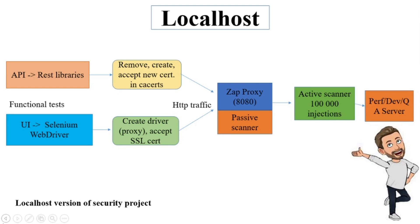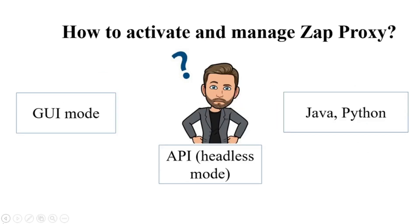After that, ZAP can generate results with alerts and a lot of useful information. The easiest way to use ZAP is in GUI mode with a user interface, but the problem is it's not automation — you still need to open ZAP and click buttons for different types of attacks. You can use ZAP clients in Java, Python, or API. I prefer ZAP API because it has its own UI in the browser. You can select any command, fill in the required parameters, and generate API requests for your test.